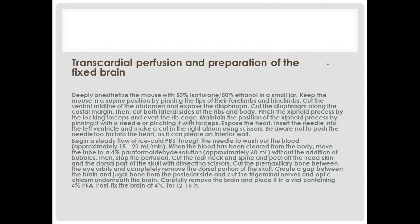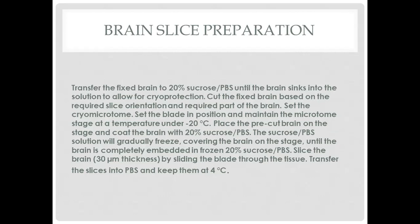The next step is brain slice preparation. Transfer the fixed brain to 20% sucrose PBS until the brain sinks into the solution to allow for cryoprotection. Cut the fixed brain based on the required slice orientation and required part of the brain. Set the cryomicrotome blade in position and maintain the microtome stage at a temperature under -20 degrees centigrade. Place the pre-cut brain on the stage and coat the brain with 20% sucrose PBS. The sucrose PBS solution will gradually freeze, covering the brain until it is completely embedded. Slice the brain at 30 micrometers thickness by sliding the blade through the tissue. Transfer the slices into PBS and keep at 4 degrees centigrade.